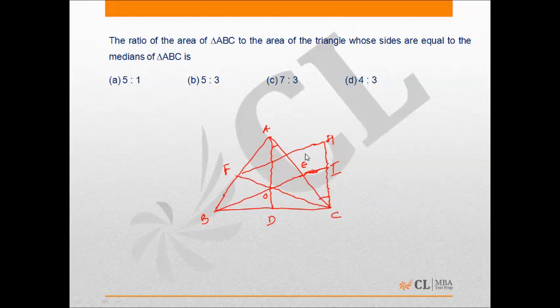This is a moderate to difficult geometry problem. We have to find the ratio of the area of triangle ABC to the area of the triangle whose sides are equal to the medians of triangle ABC.